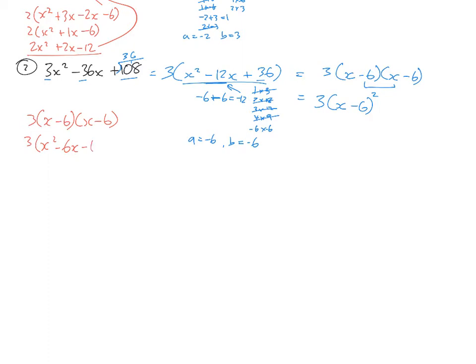3x squared, negative 12x plus 36. Three lots of everything. Negative 3x squared, negative 36x, plus 108. That's the same as that. So our factorization was correct.